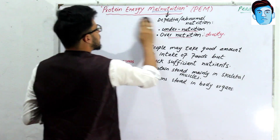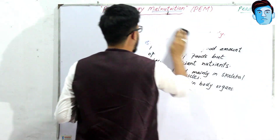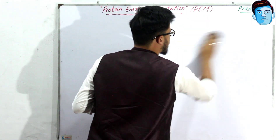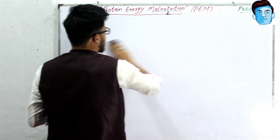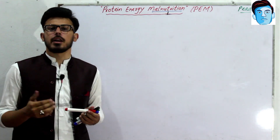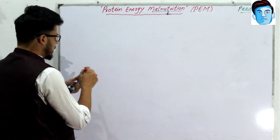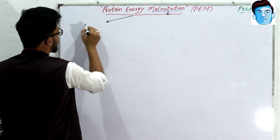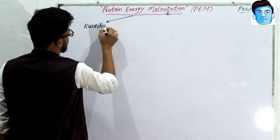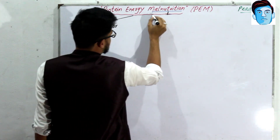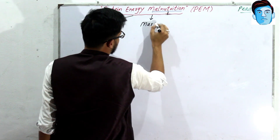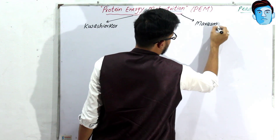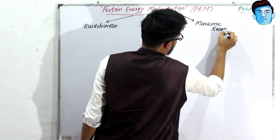Protein energy malnutrition is broadly categorized into three spectrum of diseases: the first is kwashiorkor, the second is marasmus, and the third is the combination of both — marasmic-kwashiorkor.